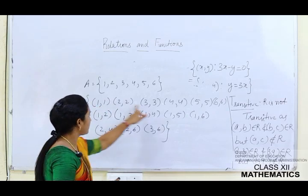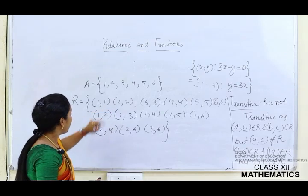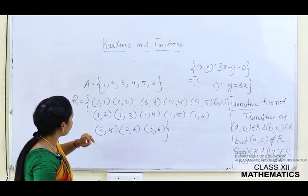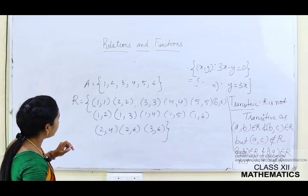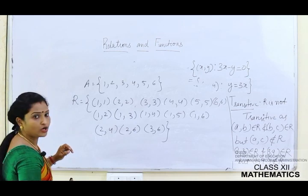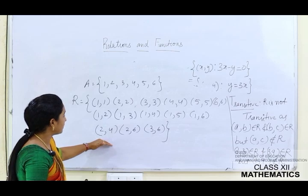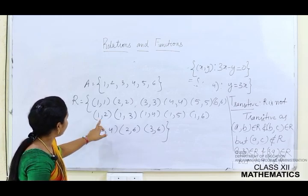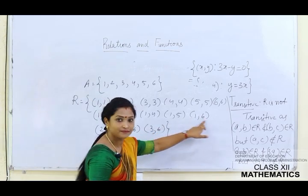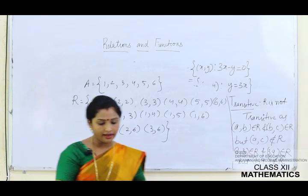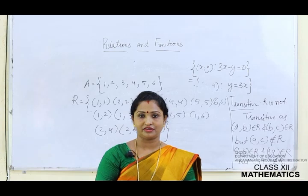Now checking the properties for question 3: since (1,1), (2,2), (3,3), (4,4), (5,5), (6,6) are all present, R is reflexive. For symmetric: (1,2) is there but (2,1) is not; (1,3) is there but (3,1) is not - so R is NOT symmetric. For transitive: (1,2) is there, (2,6) is there, and (1,6) is also there - so R is transitive. Therefore this relation is reflexive, not symmetric, but transitive.